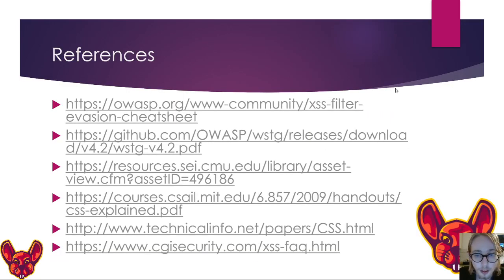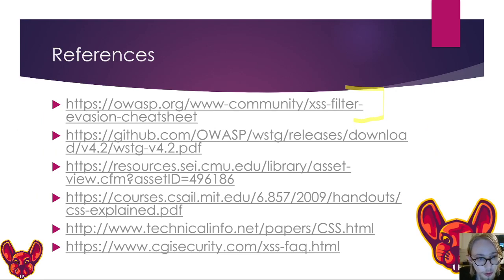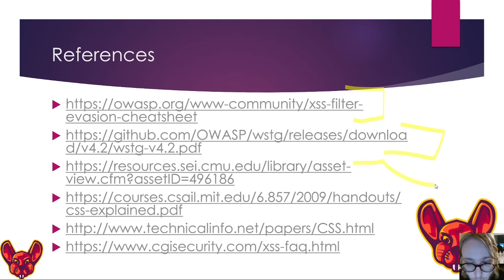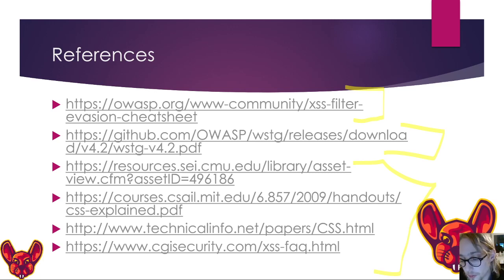For references, we used the OWASP XSS cheat sheet — a really good resource — and there's also a Burp cheat sheet linked in the extra resources file. You can look at the Web Security Testing Guide, which was a reference for this documentation, as well as some included papers that are interesting reads. Thank you very much for watching, and I will see you in the next chapter.